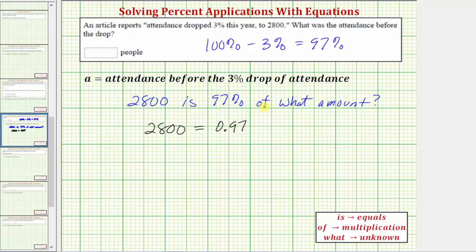Then we have 'of what amount.' Because 'of' means multiplication and 'what amount' represents the unknown, we have times, in this case, the variable a.